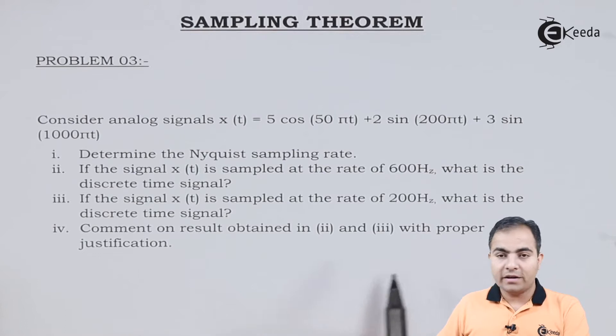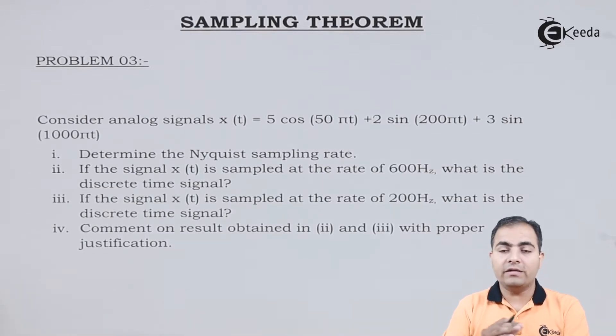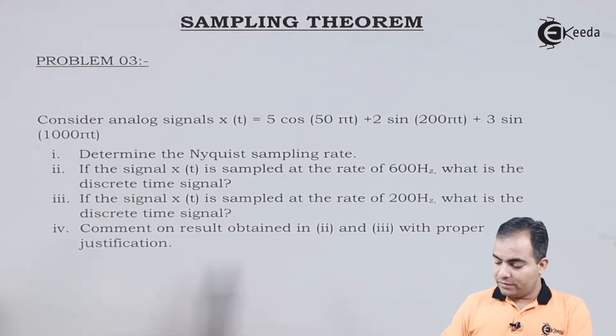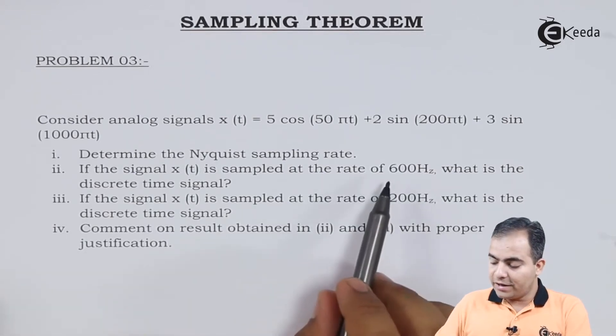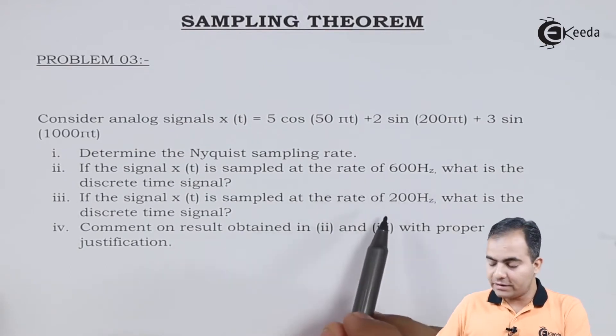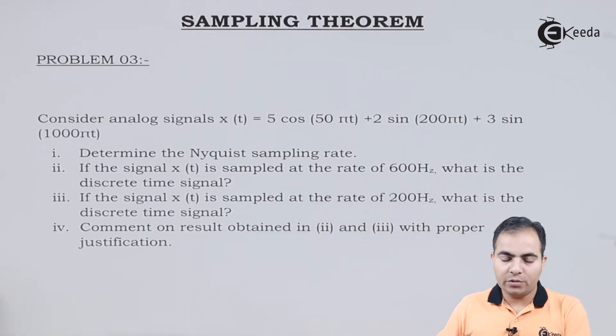In the fourth part, our comment will be related to aliasing error, and it totally depends on the sampling frequencies of 600 Hz and 200 Hz.